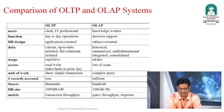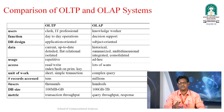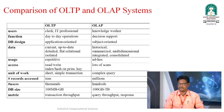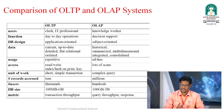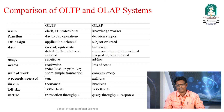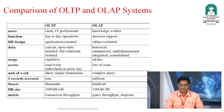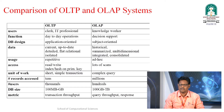To distinguish OLTP from OLAP, we can keep several parameters in mind: users, functions, DB design, data, usage, and access. For users, in OLTP you find clerks and IT professionals, whereas in OLAP there are knowledge workers. For function, day-to-day operations are used in OLTP, while OLAP provides decision support — you provide queries and conditions to acquire information.